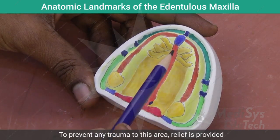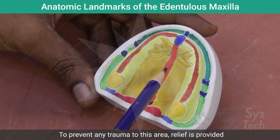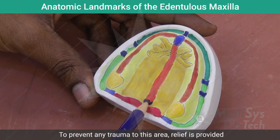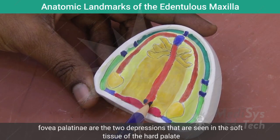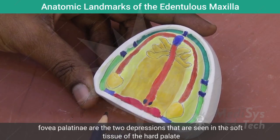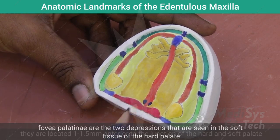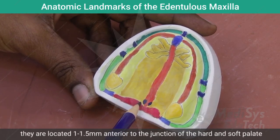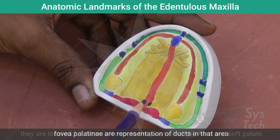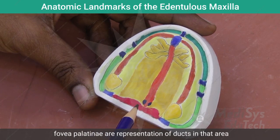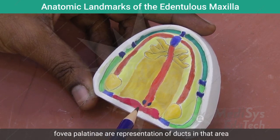Relief is provided in the mid-palatine raphae area to prevent trauma. The fovea palatina are two depressions seen in the soft tissue of the hard palate, 1 to 1.5 mm anterior to the junction of the hard and soft palate. Fovea palatina are representations of the ducts of the mucous glands in that area.